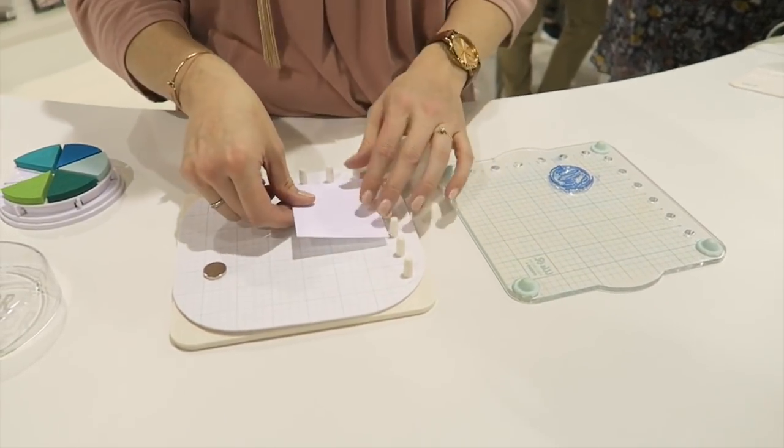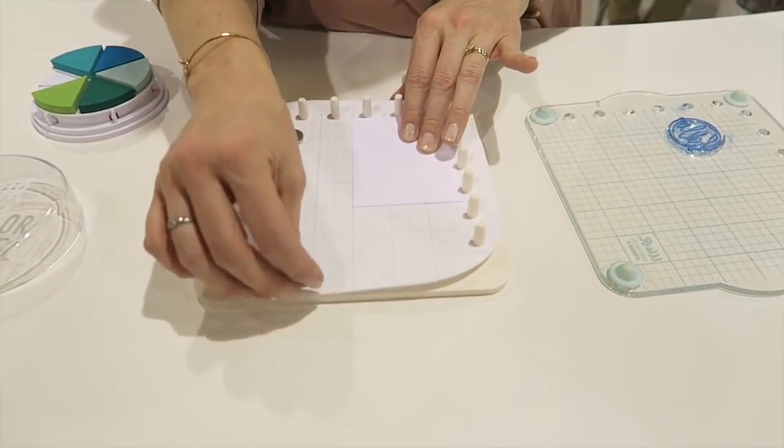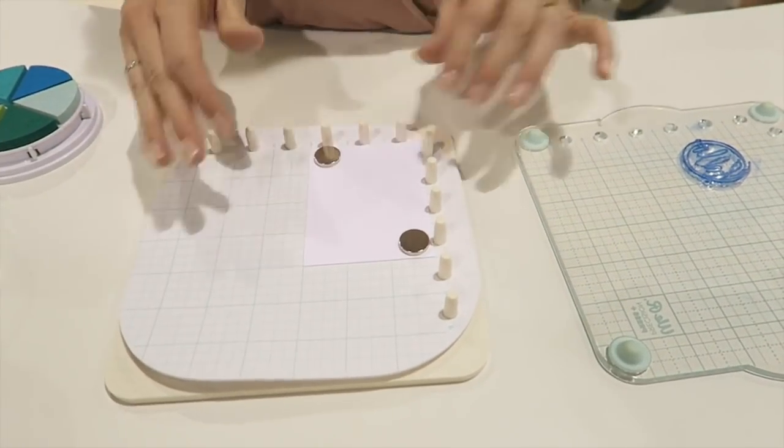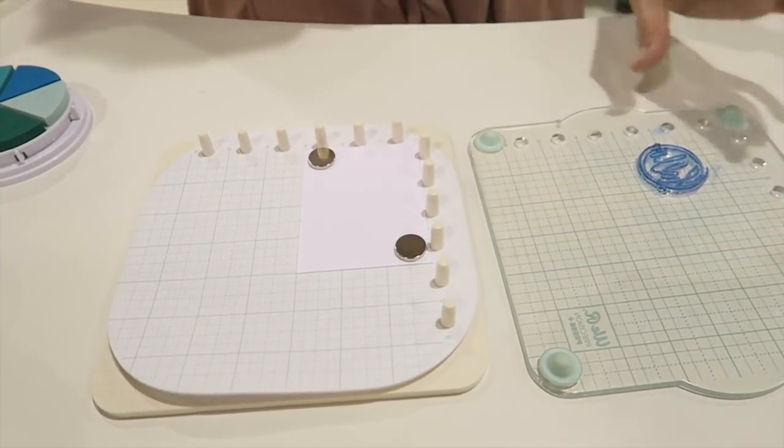So you're going to lay your paper on here. This mat is removable so you don't have to use it if you don't want to but it gets a nice impression when you do. We've got magnets. This is a magnetic board now to hold your paper in place.